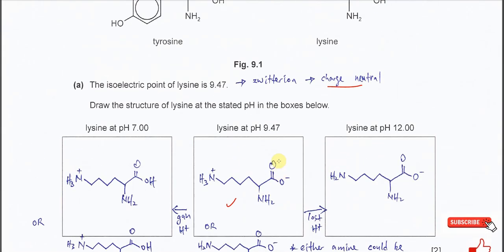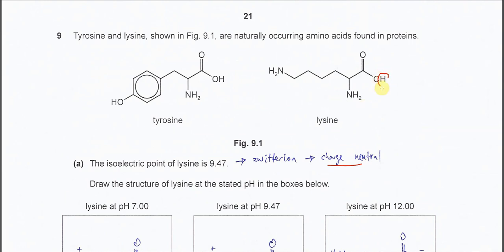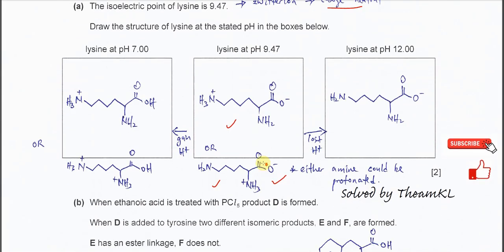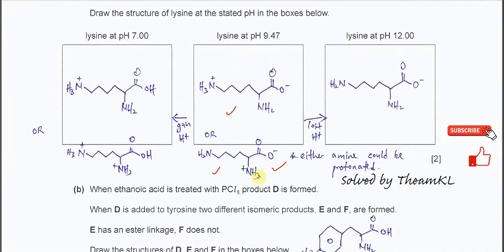The proton from the carboxylate will be gained by one of the amine groups — preferably the backbone amine — since this is the dipolar ion form of the amino acid. Now, starting from this dipolar ion, let's move to a lower pH.